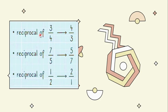We have here more examples on what the reciprocal means. We have 3 fourths, the reciprocal of that is 4 thirds. And 7 fifths, it's 5 over 7. And 1 half, the reciprocal is 2 over 1. Again, when we say reciprocal, it's just the inverse of the fraction. To get the reciprocal, we just need to interchange their positions.